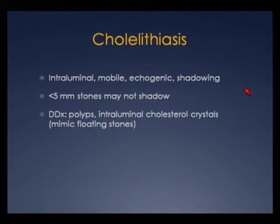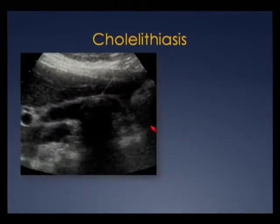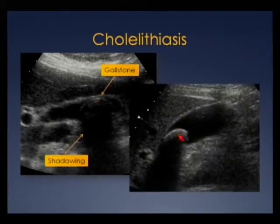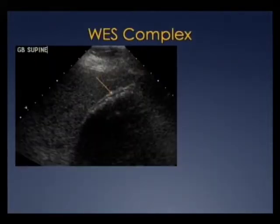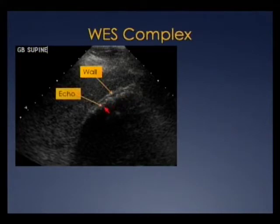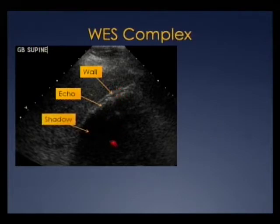Gallstones are probably the most common reason for right upper quadrant ultrasound. Gallstones are intraluminal, they move, they're echogenic, and they shadow. However, stones less than 5 millimeters may not shadow. The differential includes polyps, which do not move, and intraluminal cholesterol crystals which can mimic floating stones. Here's a sagittal image showing a gallstone with dense posterior acoustic shadowing. The wall-echo-shadow complex refers to the echogenic gallbladder wall, the echogenic top layer of gallstones, and dense posterior acoustic shadowing — this is a stone-filled gallbladder.